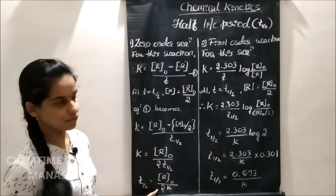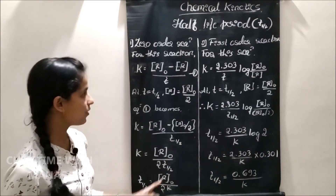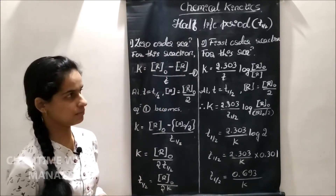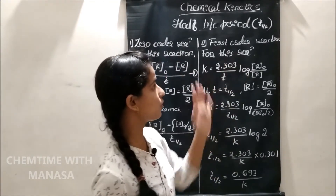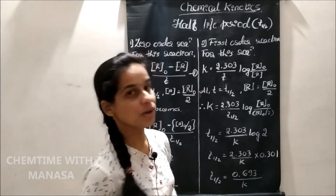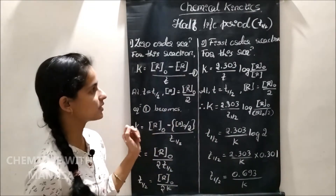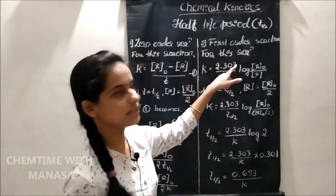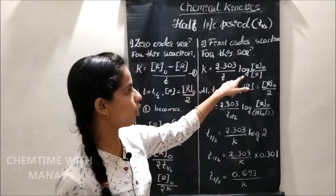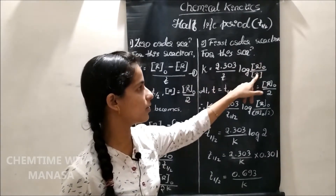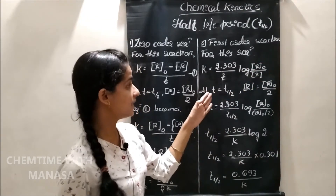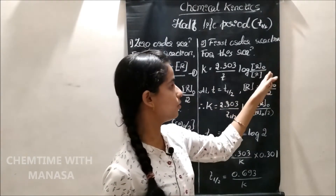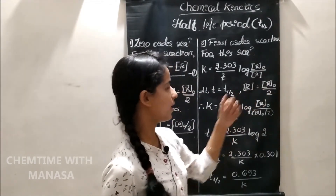Similarly, for the first order reaction, we know that the rate constant is given by K equals 2.303 divided by T, multiplied by log of R naught by R. At T equals T half, R is equal to R naught by 2.